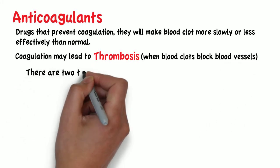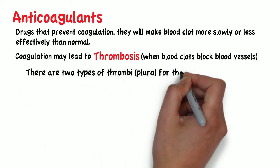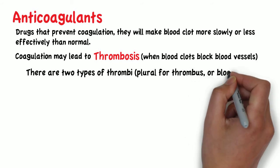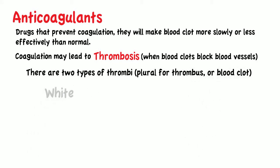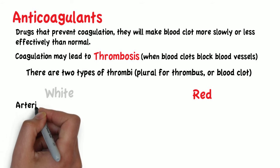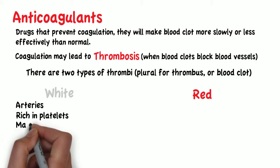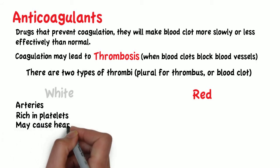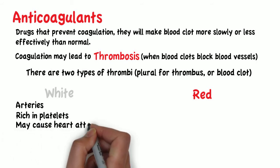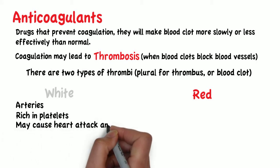There are two main types of thrombi: white thrombi and red thrombi. White thrombi are formed in the lumen of arteries and are rich in platelets. These thrombi may travel to your heart or your brain and lead to a heart attack or stroke.